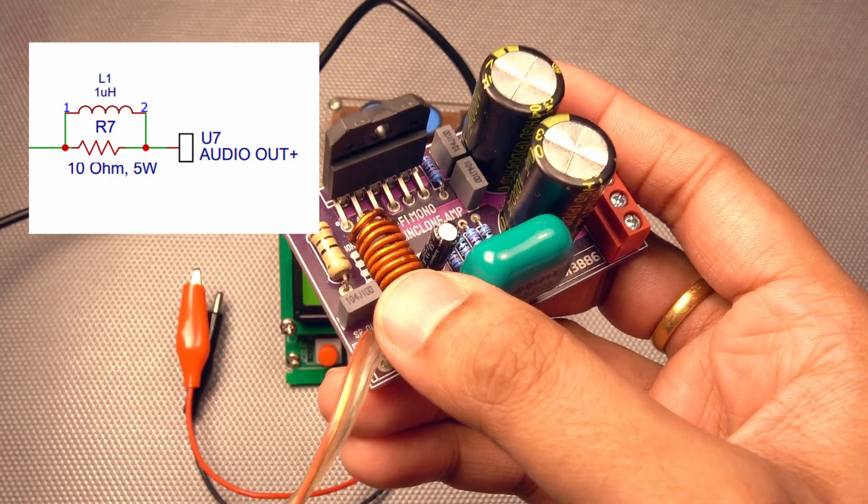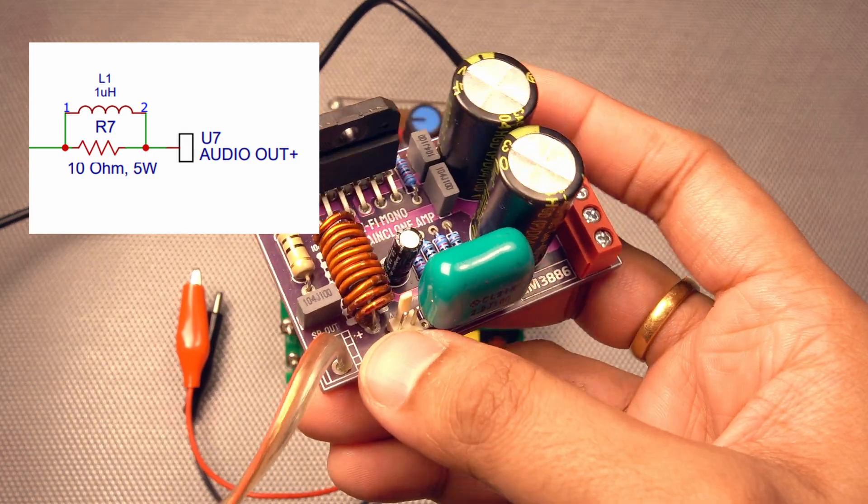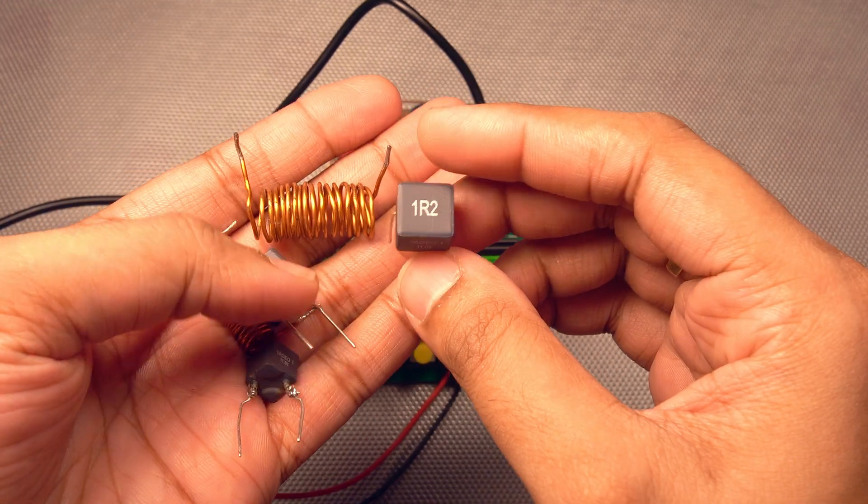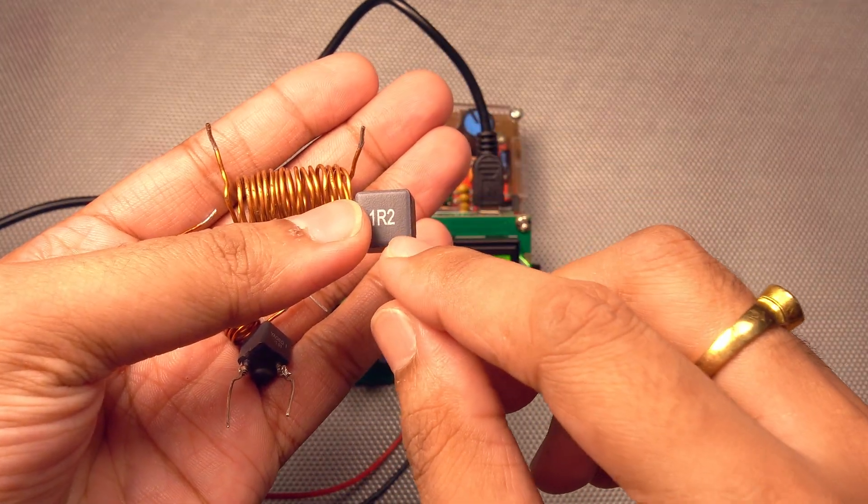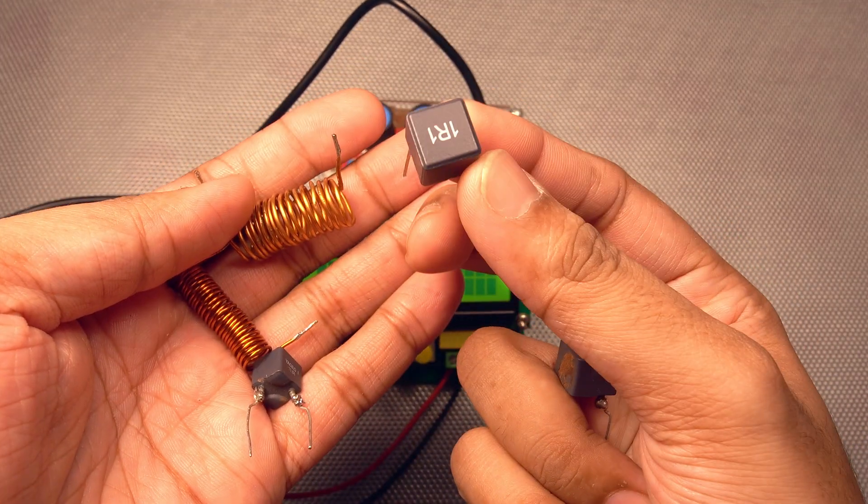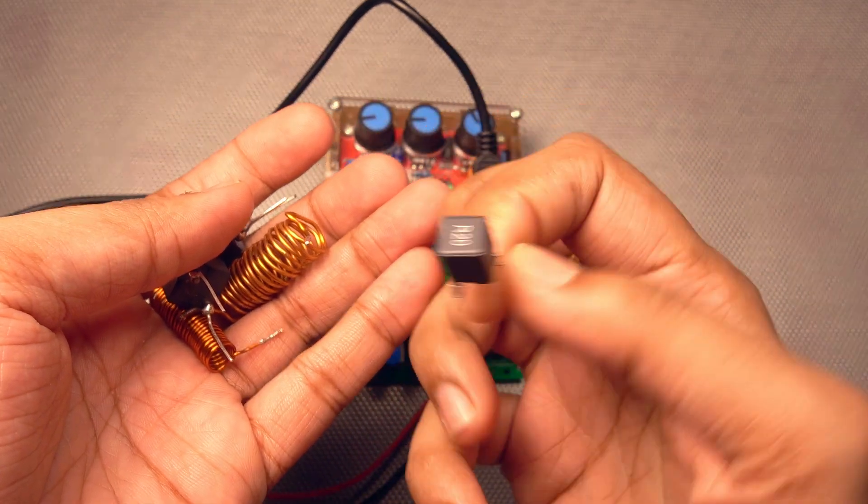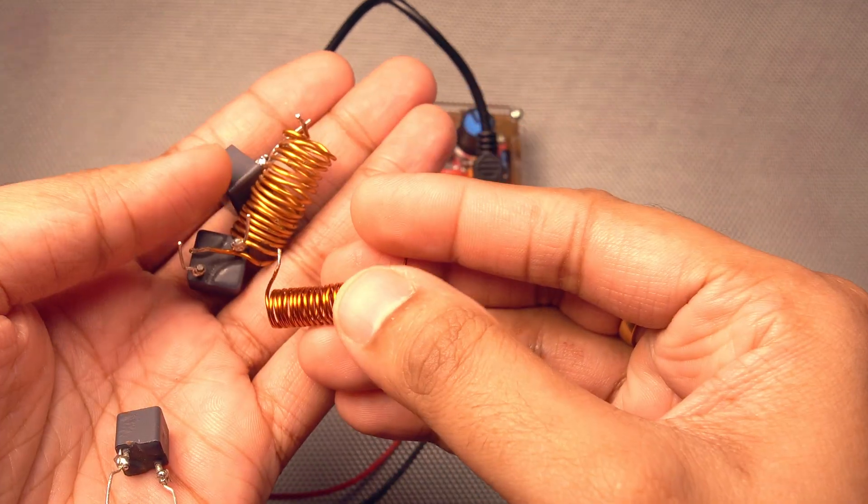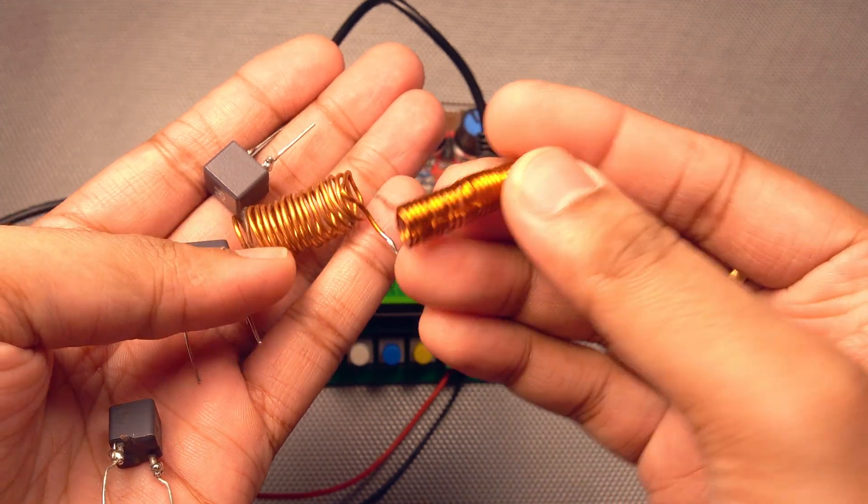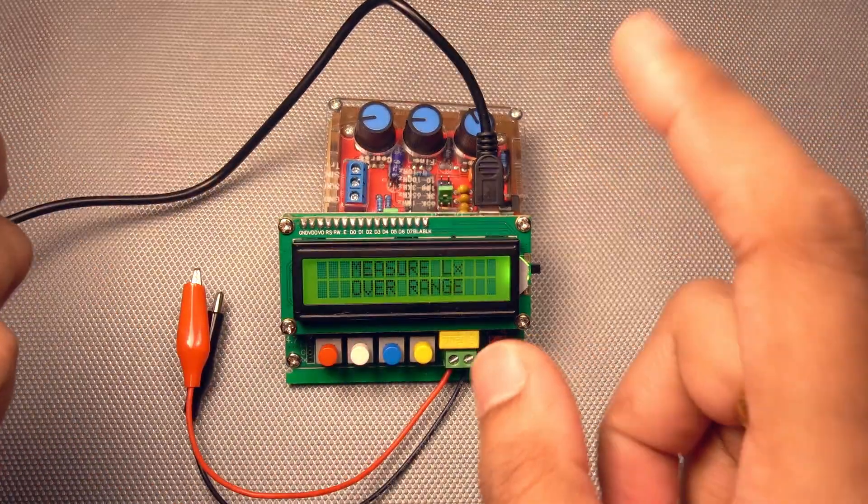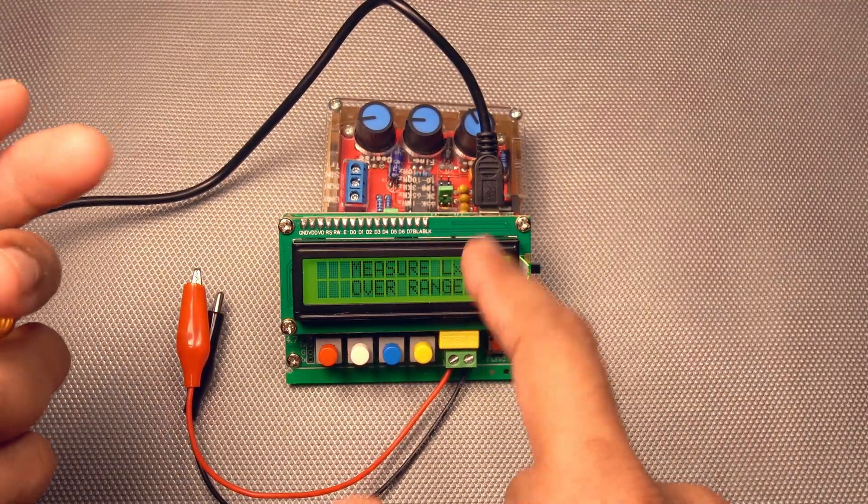typically ranging from 0.7 to 1 microhenry in value. And I do have some couple of low value inductors in here. These ones are 1.2 microhenry, this is 1.1 microhenry, and this is 0.2 microhenry. And these air core coils are typically in the range between 1 to 2 microhenry also.